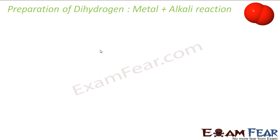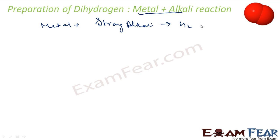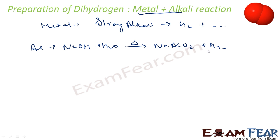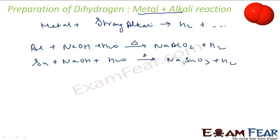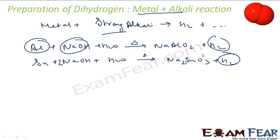The next method is metal plus alkali. You take a metal and a strong alkali, and it will give you hydrogen plus a salt. For example, aluminum plus sodium hydroxide with some water, when heated, gives NaAlO₂ plus hydrogen gas. Similarly, silicon plus sodium hydroxide when heated gives Na₂SiO₃ plus H₂. Metal and strong alkali will also give you hydrogen gas.